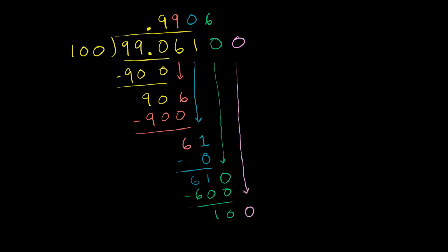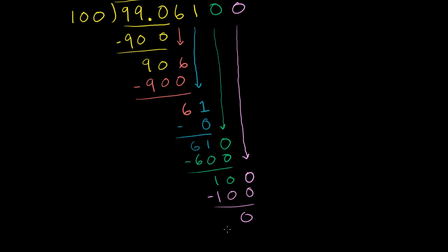So we have another 0 there. 100 goes into 100 exactly one time. 1 times 100 is 100. And then now when you subtract, we have no remainder. And we are satisfied. And we're done.